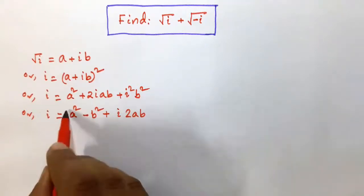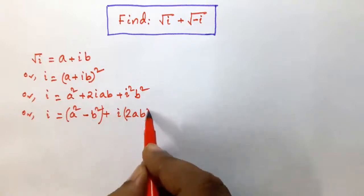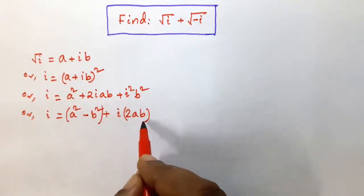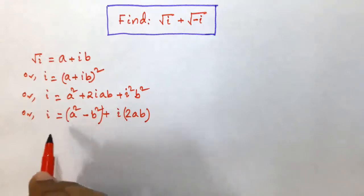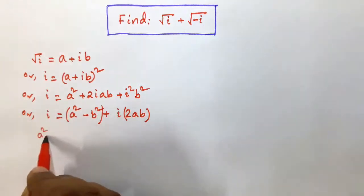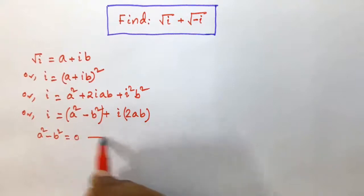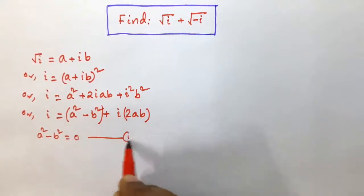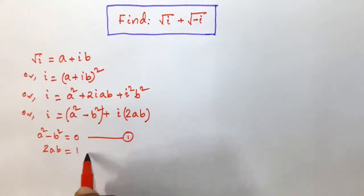Now, see that this is the real part and this is the imaginary part. So, comparing both sides with the real and imaginary parts, we find a squared minus b squared is equal to 0, and twice ab is equal to 1.